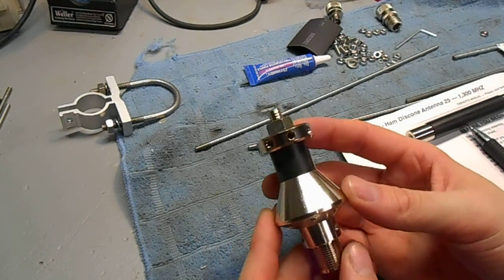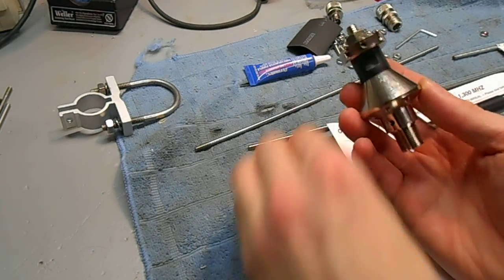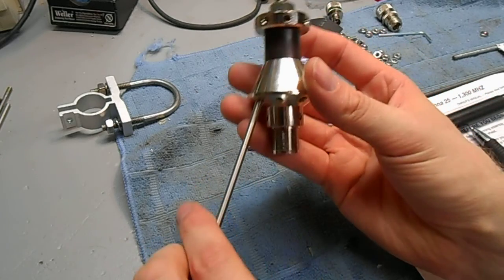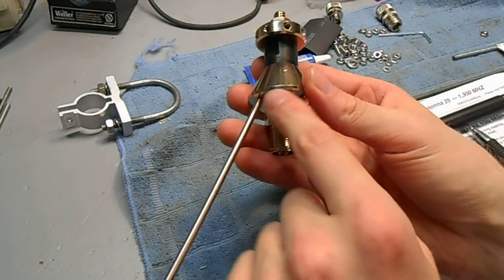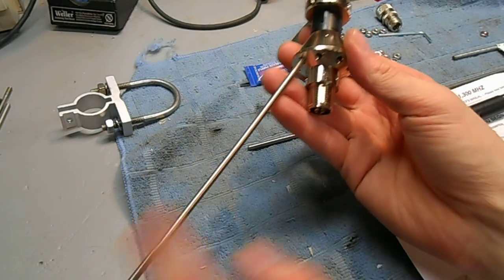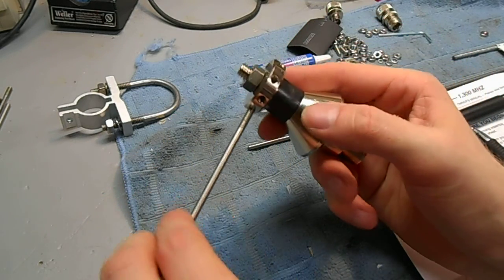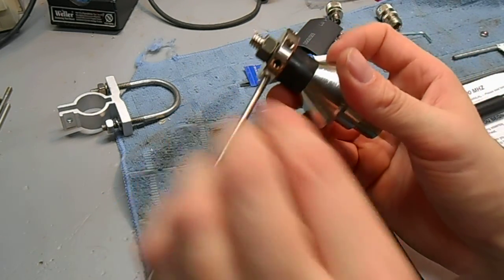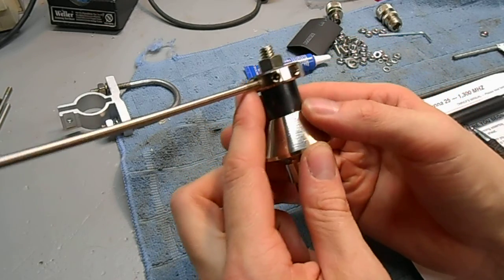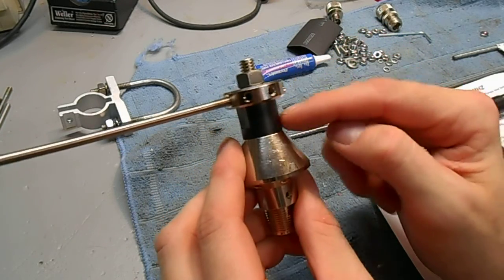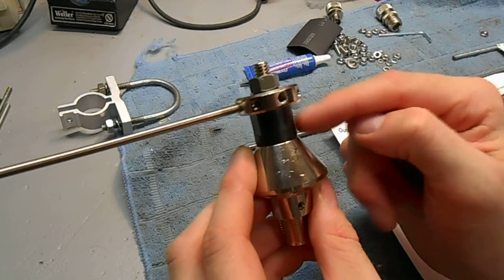This is the main body of the discone. There will be 8 radials making up the cone element. The radials are about 3 feet long. There's also 8 horizontal disc elements. And there is an isolator. This is a plastic isolator between them.